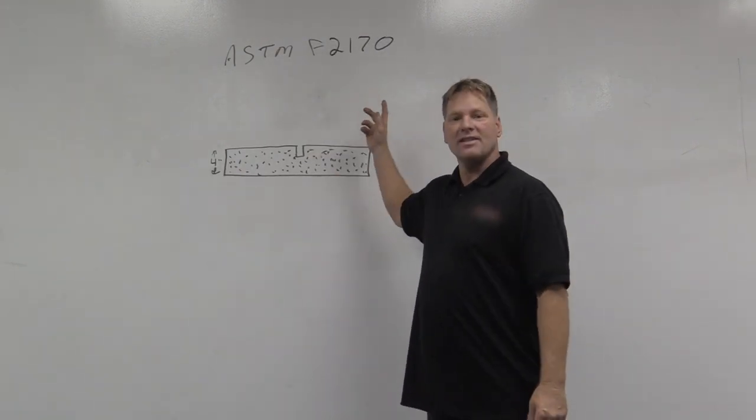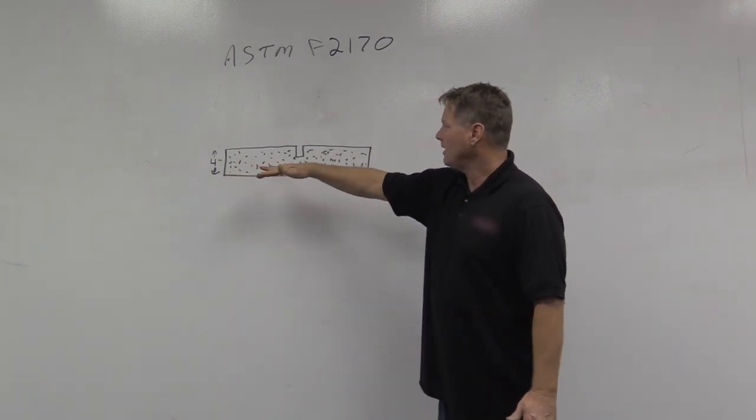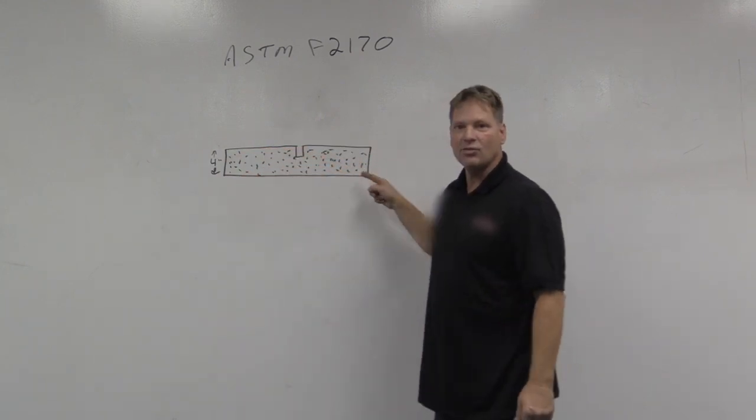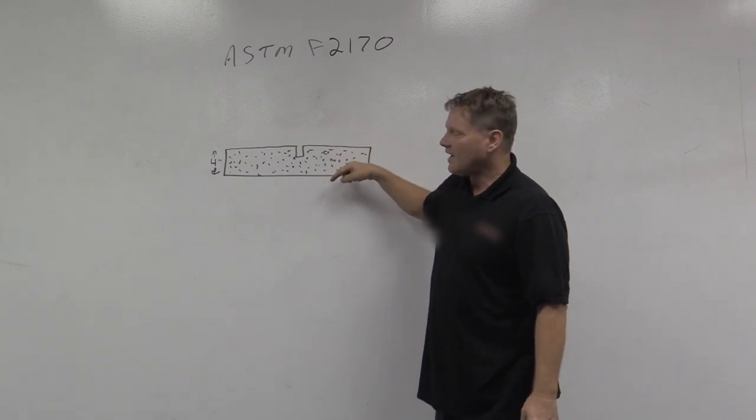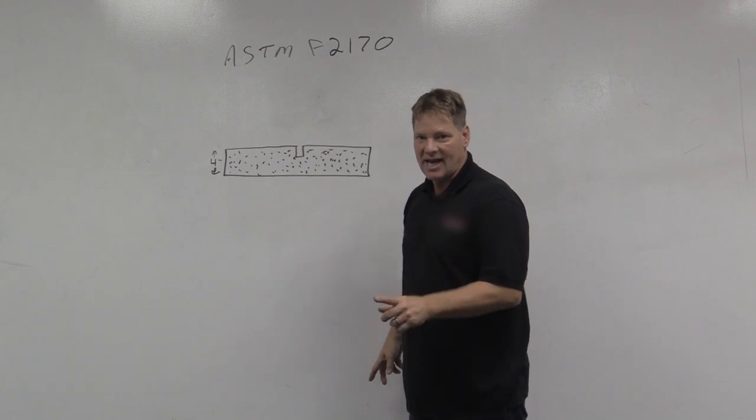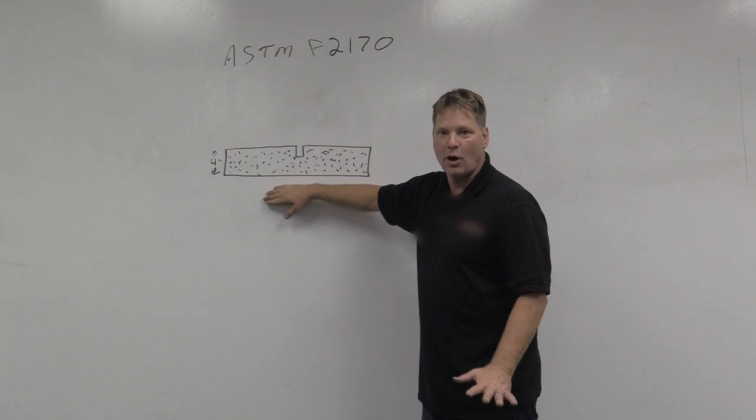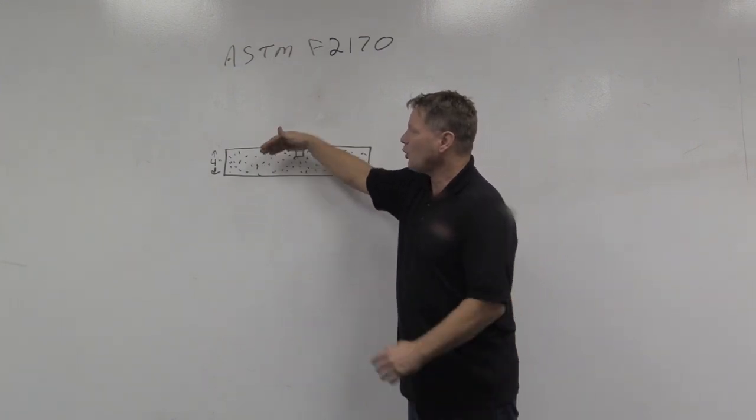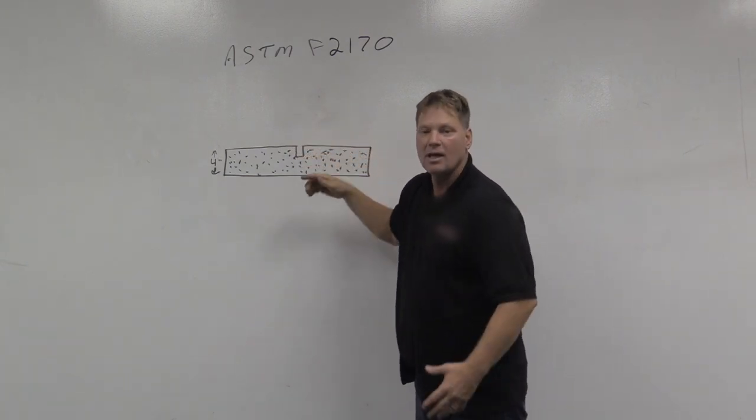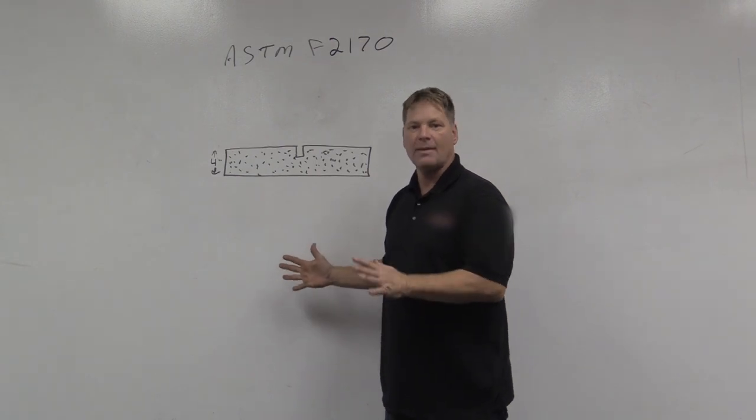ASTM F2170 is a totally different test. Now we're at an elevation looking across the slab. The first thing we do in this test is we drill a three-quarter inch hole to 40% of the slab depth if curing from one side only. This is slab on grade for our example. If it was curing from both sides like an elevated pan deck, you would only go to the 20% depth. Most of the work we do seems to be on slab on grade, so I'm going to focus on the 40% slab depth.